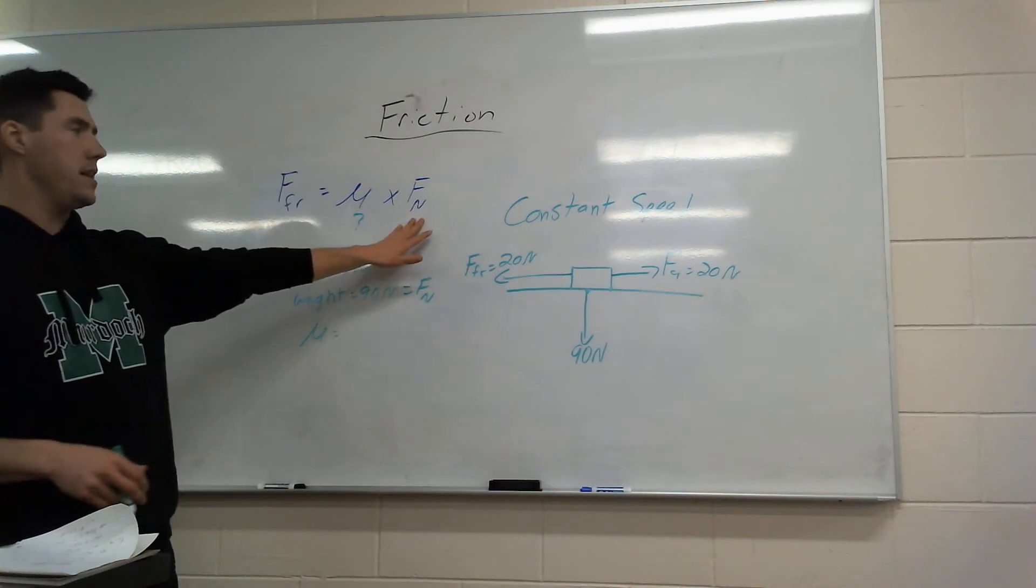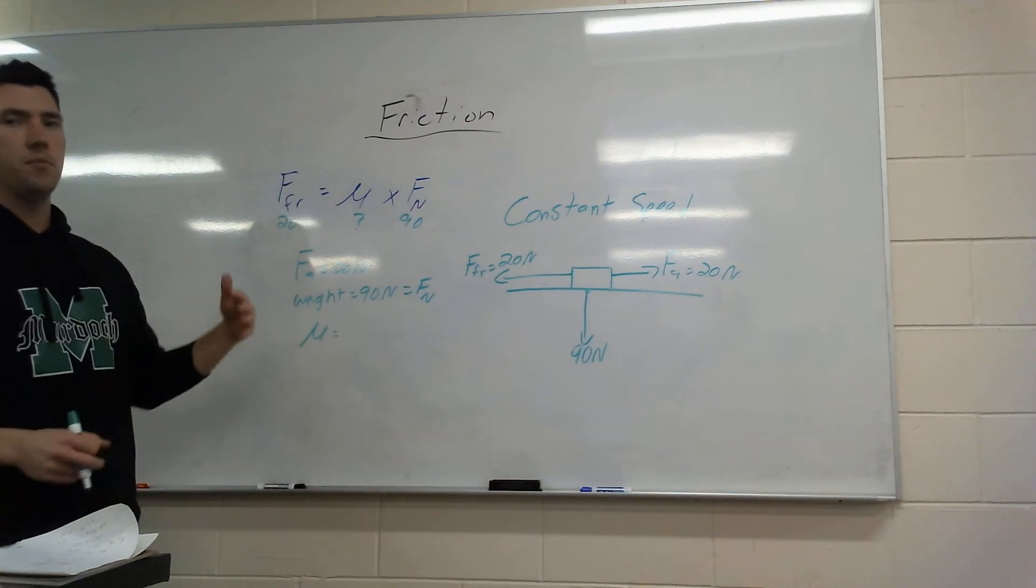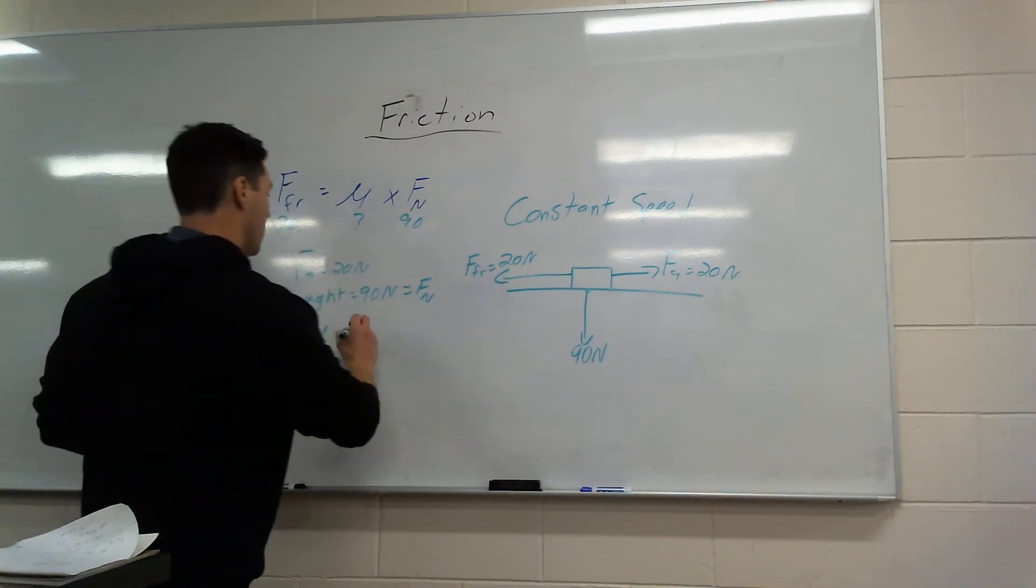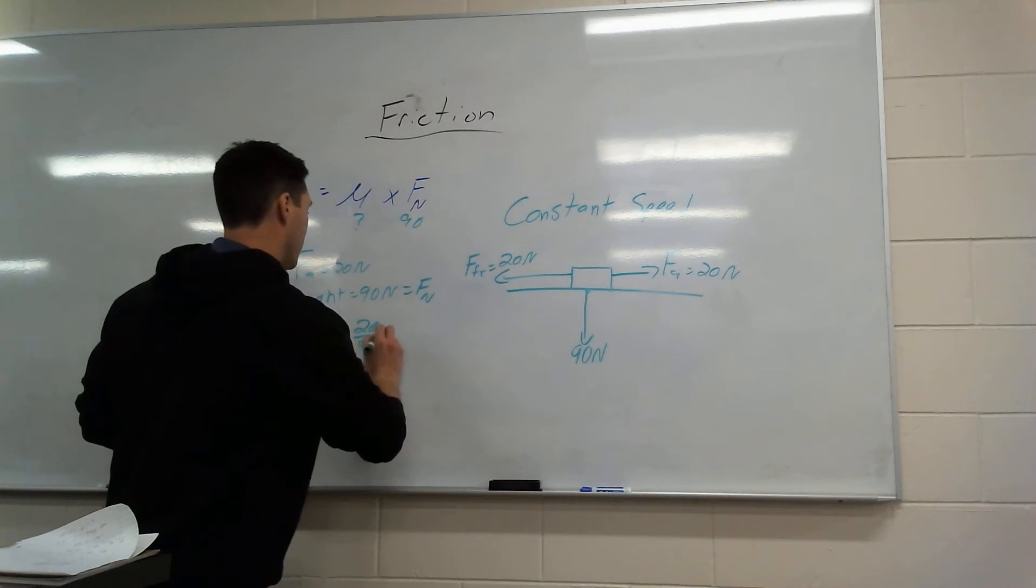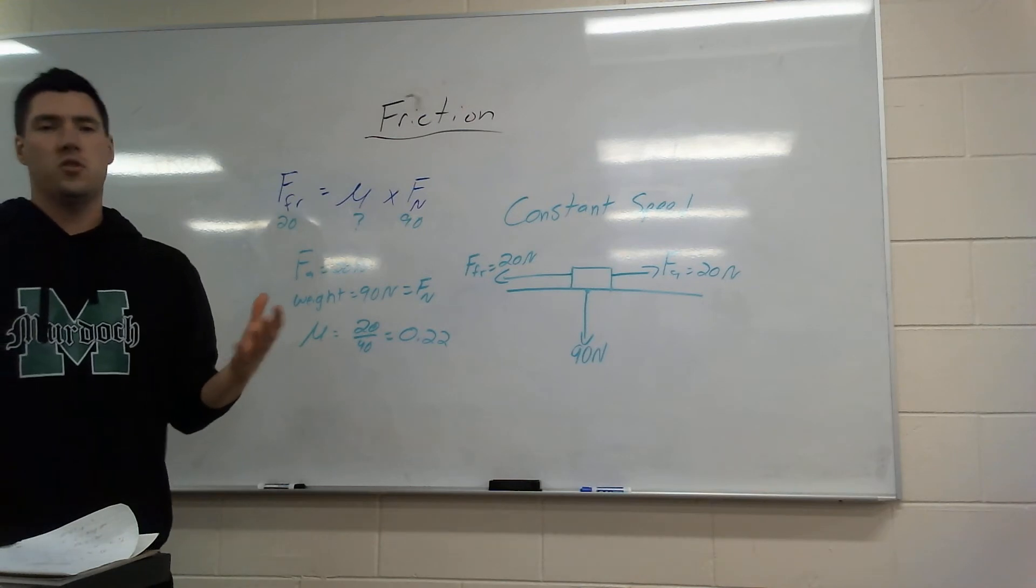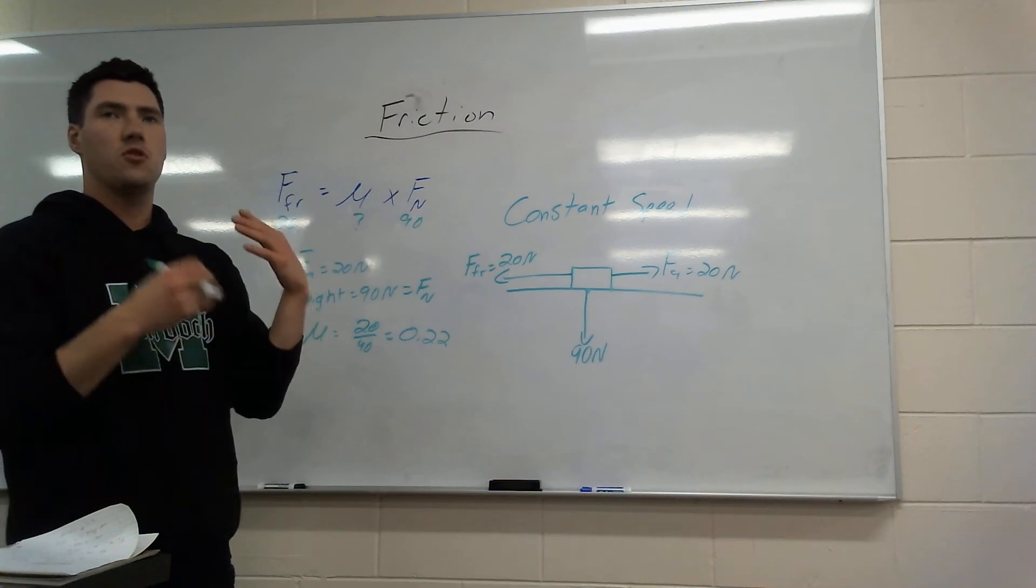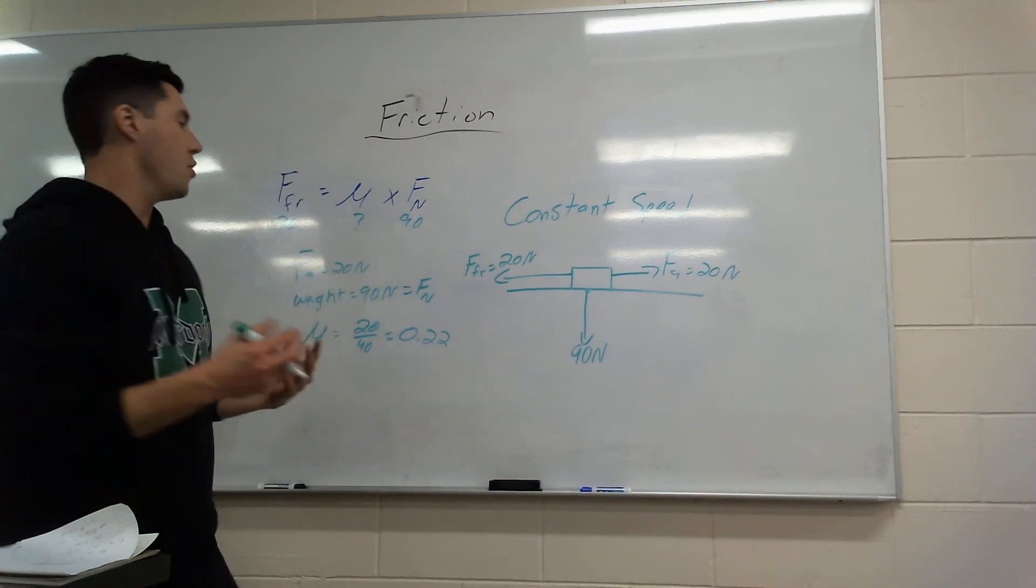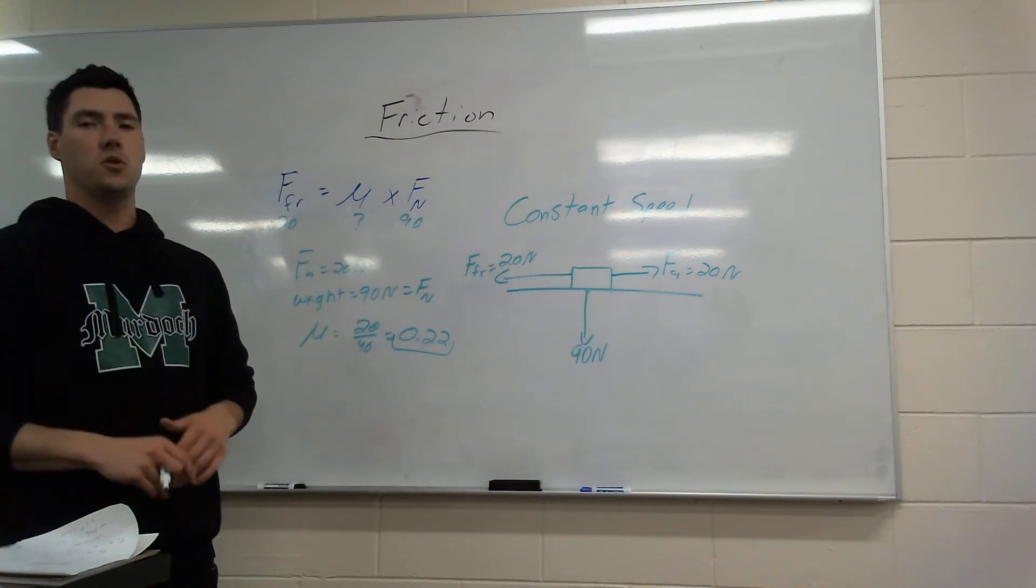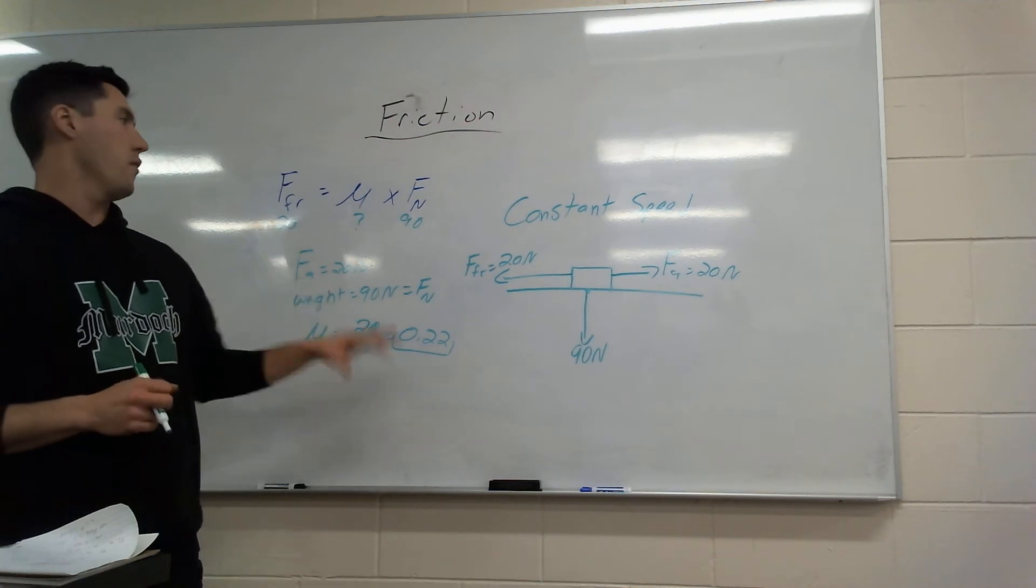Now we can actually do something. We have a force of friction which is 20. We have force normal which is 90. So if I put this here, 20 and 90, we can use it to start. Just divide this by 90, divide this by 90. 20 divided by 90 gives me 0.22. And there's no units here, which is kind of a weird thing. But there's no units. It's kind of a ratio or a percentage. The coefficient of friction is 0.22.